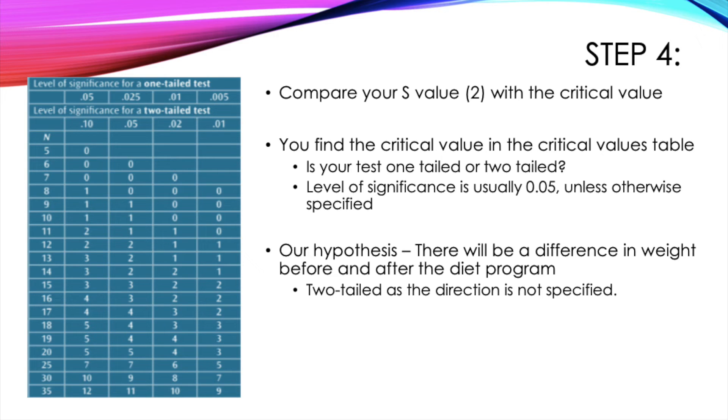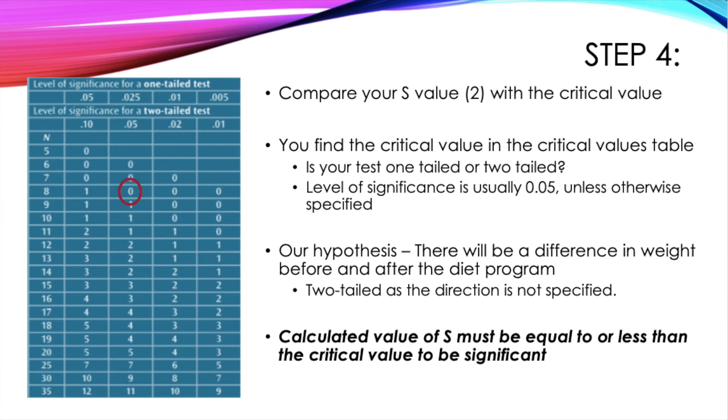As I stated earlier in the video, our hypothesis is two-tailed because we simply stated that there would be a difference in weight. Now that we know all of these factors, we can see from the critical values table that our critical value is 0.